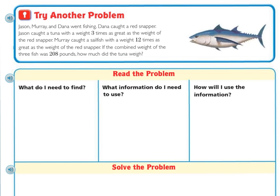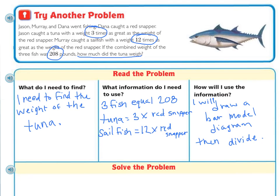Press pause and take a moment to fill out this information. What do you need to find? What information do you need to use? And how will I use the information? You should have underlined and written that you need to find the weight of the tuna. That all three fish equal 208 pounds. The tuna was three times the weight of the red snapper. And the sailfish was 12 times the weight of the red snapper. And how will you use this information? You will draw a bar model diagram and then divide.